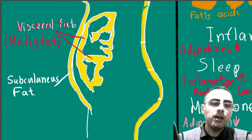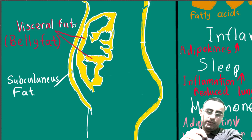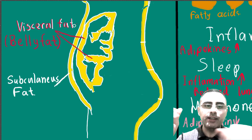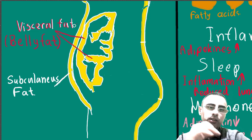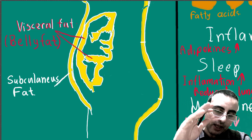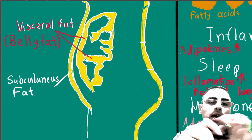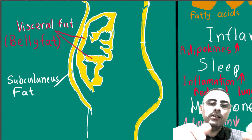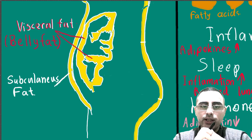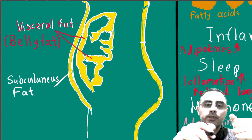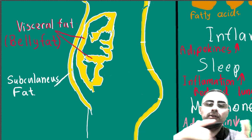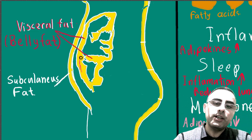Subcutaneous fat is beneath the skin, directly under the skin, and you can pinch it. Subcutaneous fat is everywhere in our body, it's under the skin. Visceral fat is around our internal organs — for example, the liver, pancreas, stomach, and intestines. It surrounds our internal organs.